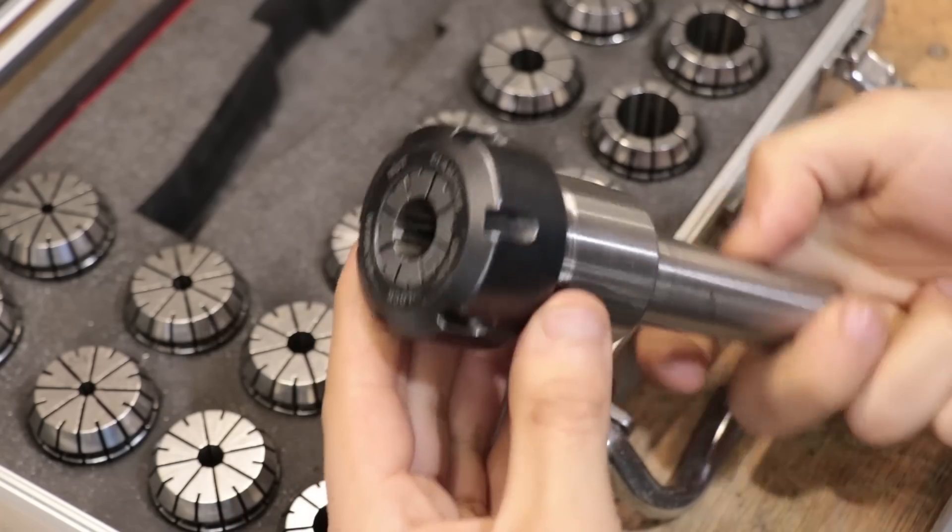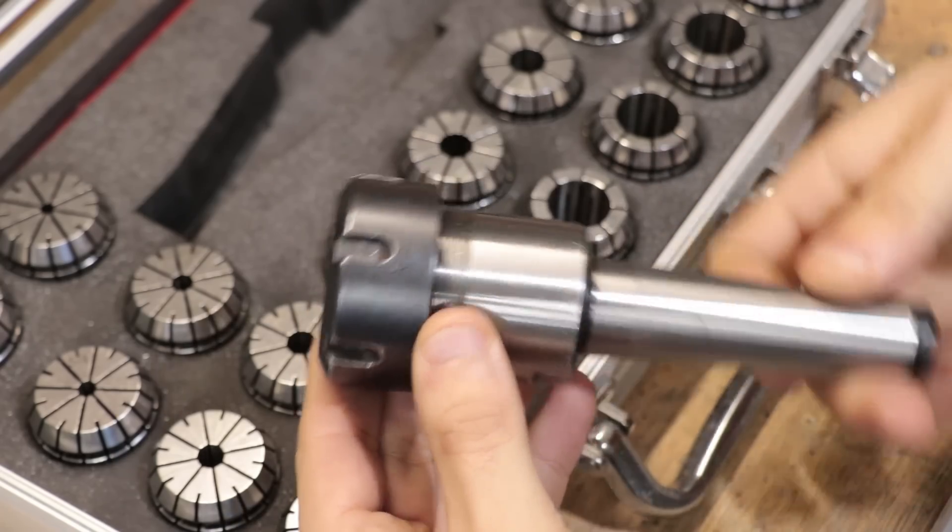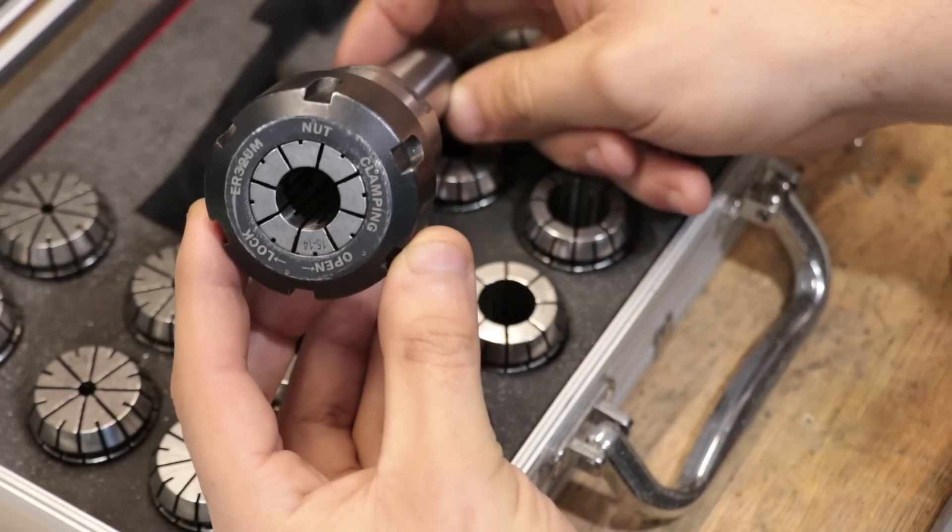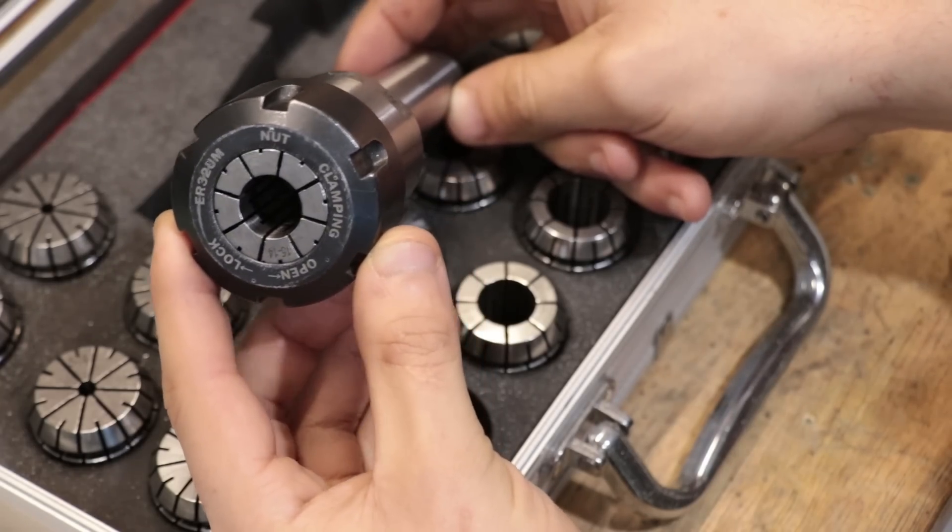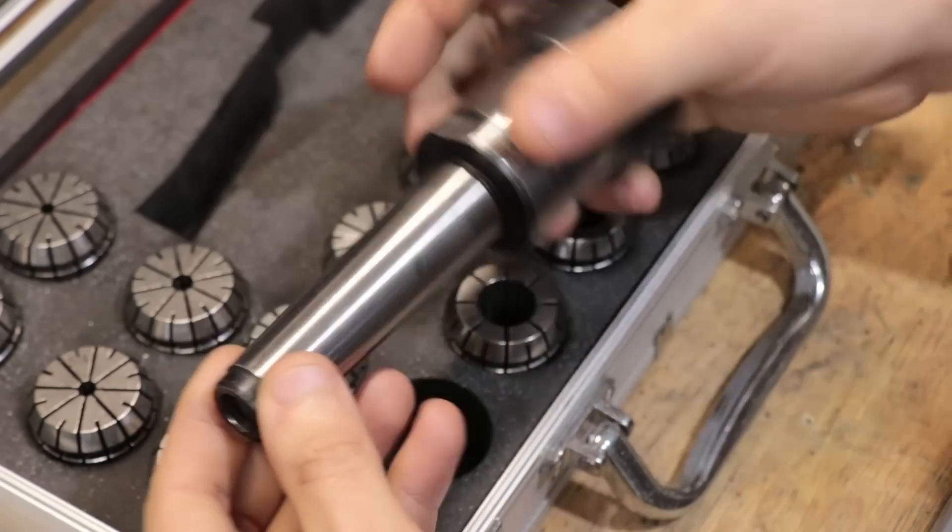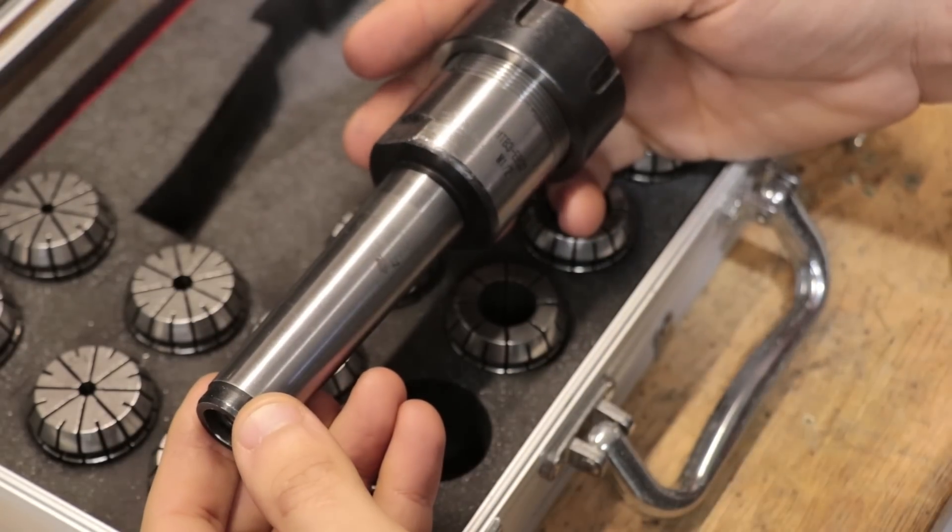I'm sure that a few of you will remember the collet chuck that I bought last year for the milling machine. This end takes ER32 collets and on the other end there is a number three morse taper which goes in the milling machine.